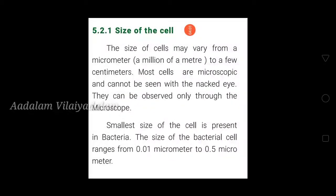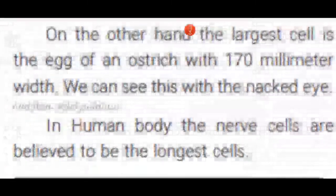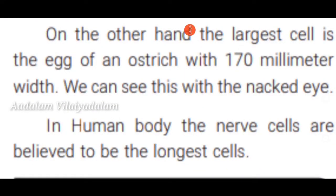The size of a cell may vary from a micrometer to a centimeter. The smallest cell is present in bacteria — the size of a bacterial cell ranges from 0.01 micrometer to 0.5 micrometer. The largest cell is the egg of an ostrich, with a width of 170 millimeters. The nerve cells in the human body are also among the longest cells.